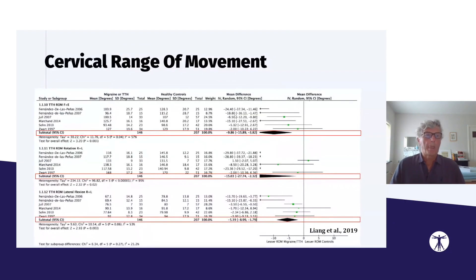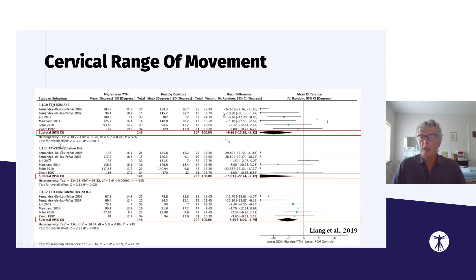For tension-type headache, there is a difference in flexion and extension between patients with chronic and episodic tension-type headache compared to healthy controls. This is also the case for rotation — both left and right — where there is a mean difference of 15 degrees. For lateral flexion, right and left combined, there is a mean difference of 5 degrees.